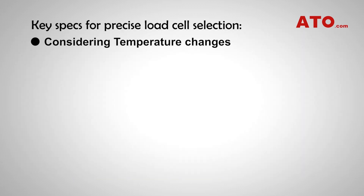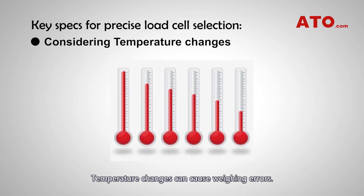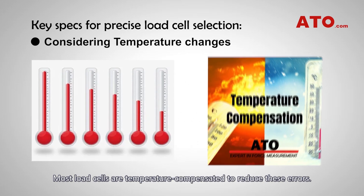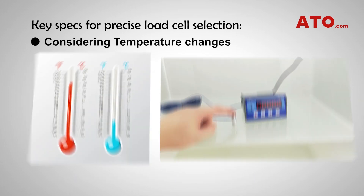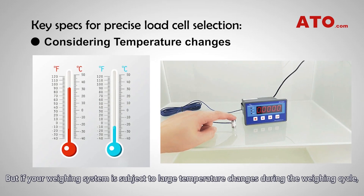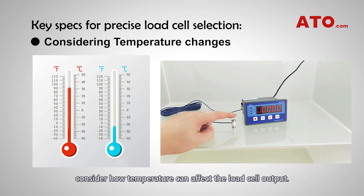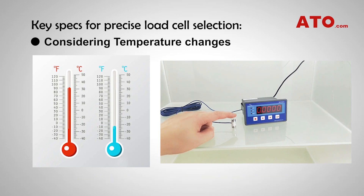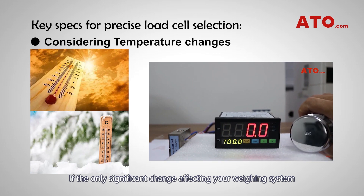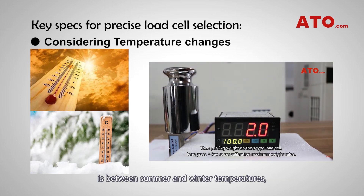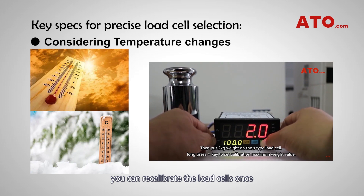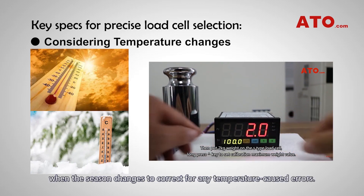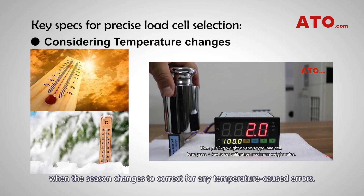Considering temperature changes. Temperature changes can cause weighing errors. Most load cells are temperature compensated to reduce these errors. But if your weighing system is subject to large temperature changes during the weighing cycle, consider how temperature can affect the load cell output. If the only significant change is between summer and winter temperatures, you can recalibrate the load cells once when the season changes to correct for any temperature-caused errors.